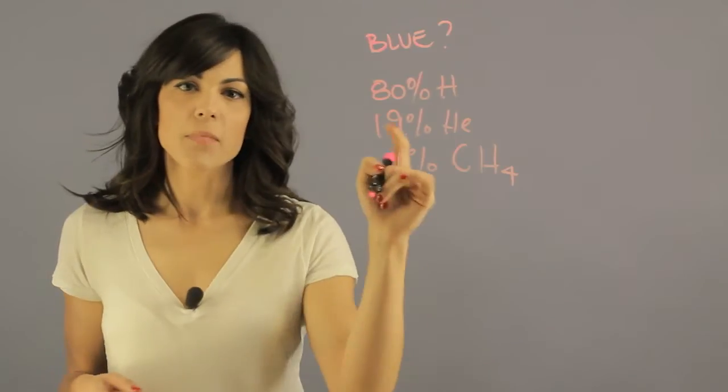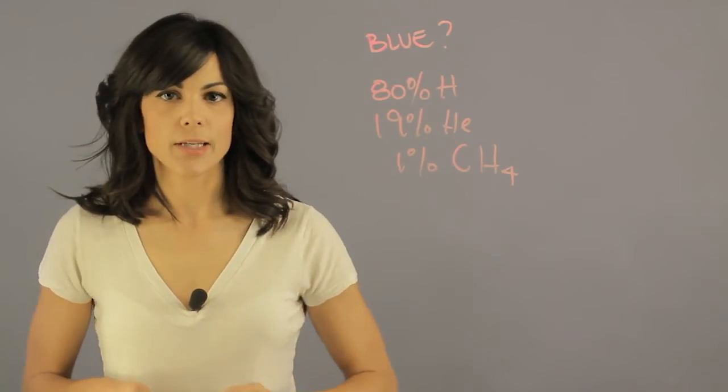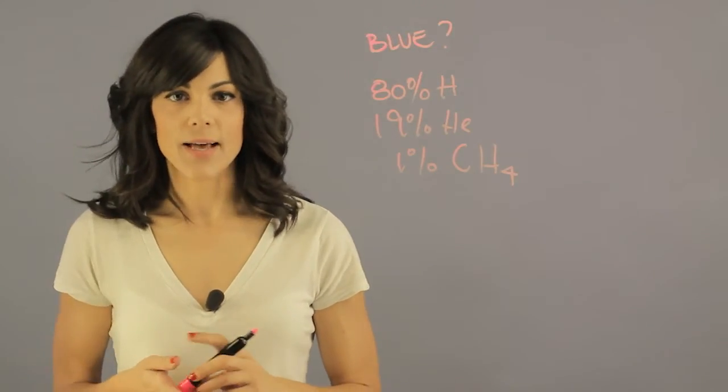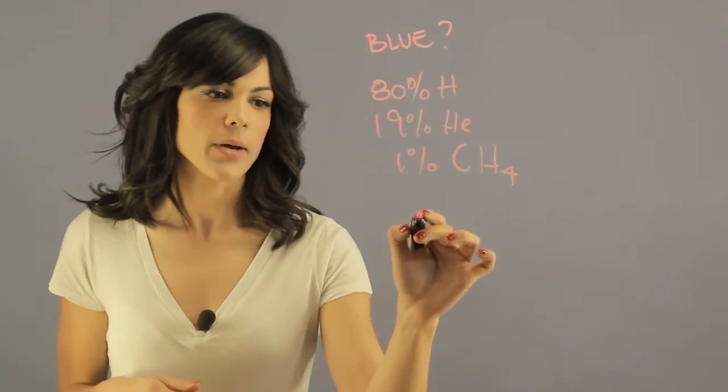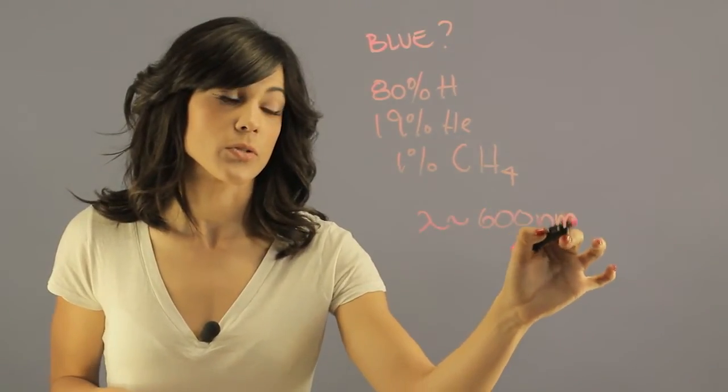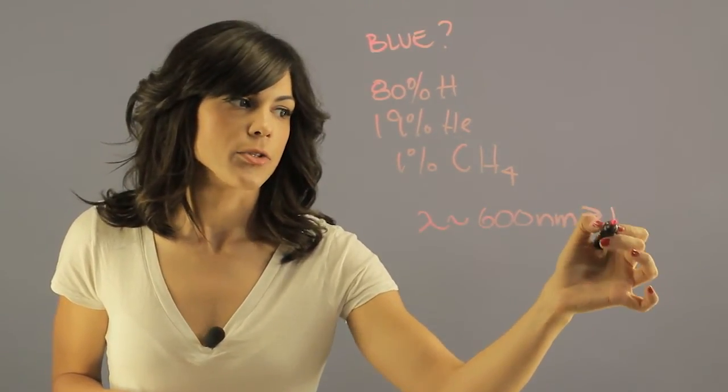Now the methane presence is directly correlated to how blue a planet can be and the reason is that methane actually has an absorption band around 600 nanometers which corresponds to red light.